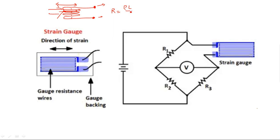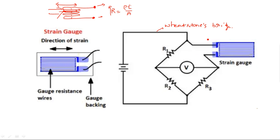Resistance equals ρL/A — until and unless there is a change in length and area, R will not vary. So if any compression or expansion occurs, R will definitely vary. Now consider this bridge — it is a Wheatstone bridge. The purpose of a Wheatstone bridge is to calculate the resistance of any unknown device or unknown resistance, connected at one of the four arms of the bridge.